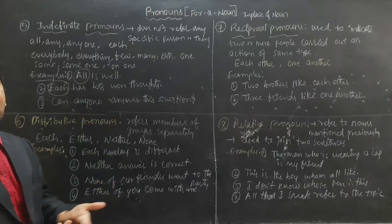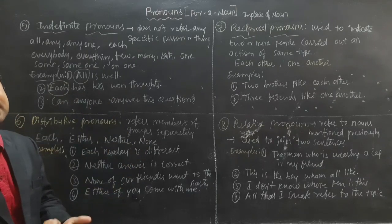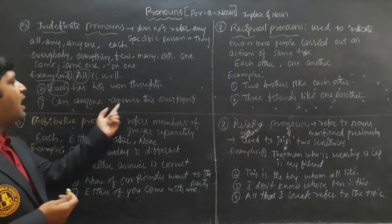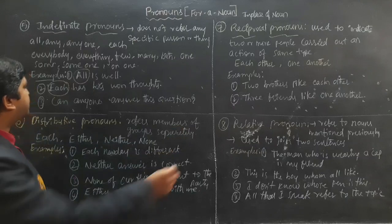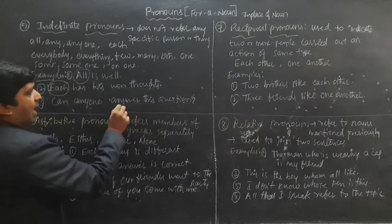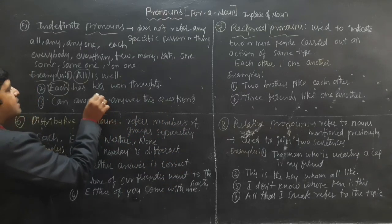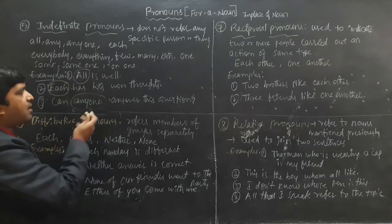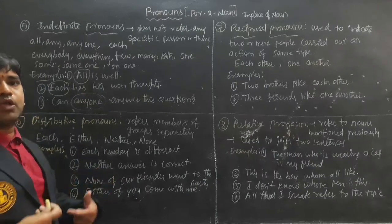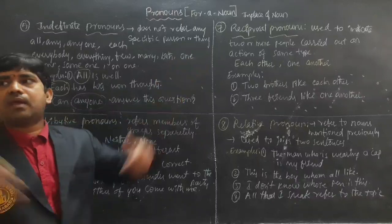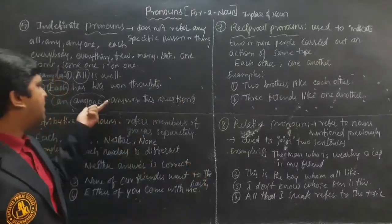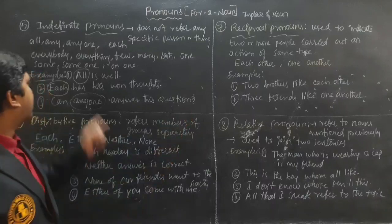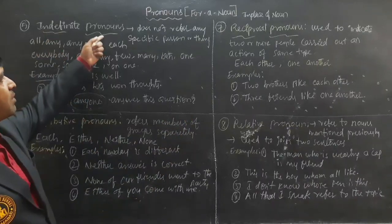'Can anyone answer this question?' — it is a general question. We are asking 'anyone' to answer. 'Anyone' means maybe you, maybe they, maybe he, maybe she — anyone can answer this question. In this way we use Indefinite Pronouns.